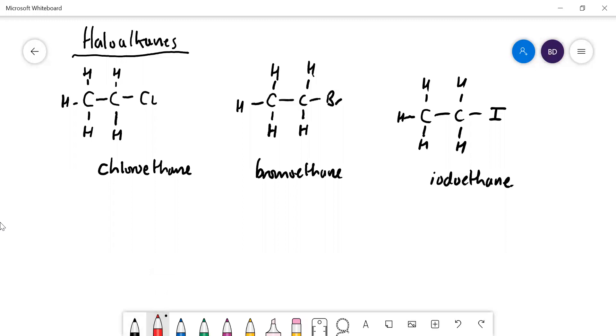But if you stick a halogen atom onto an alkane, that immediately makes it a lot more interesting and more reactive. That's because halogens are fairly electronegative elements, so the bond between the carbon and the halogen is going to be polar.